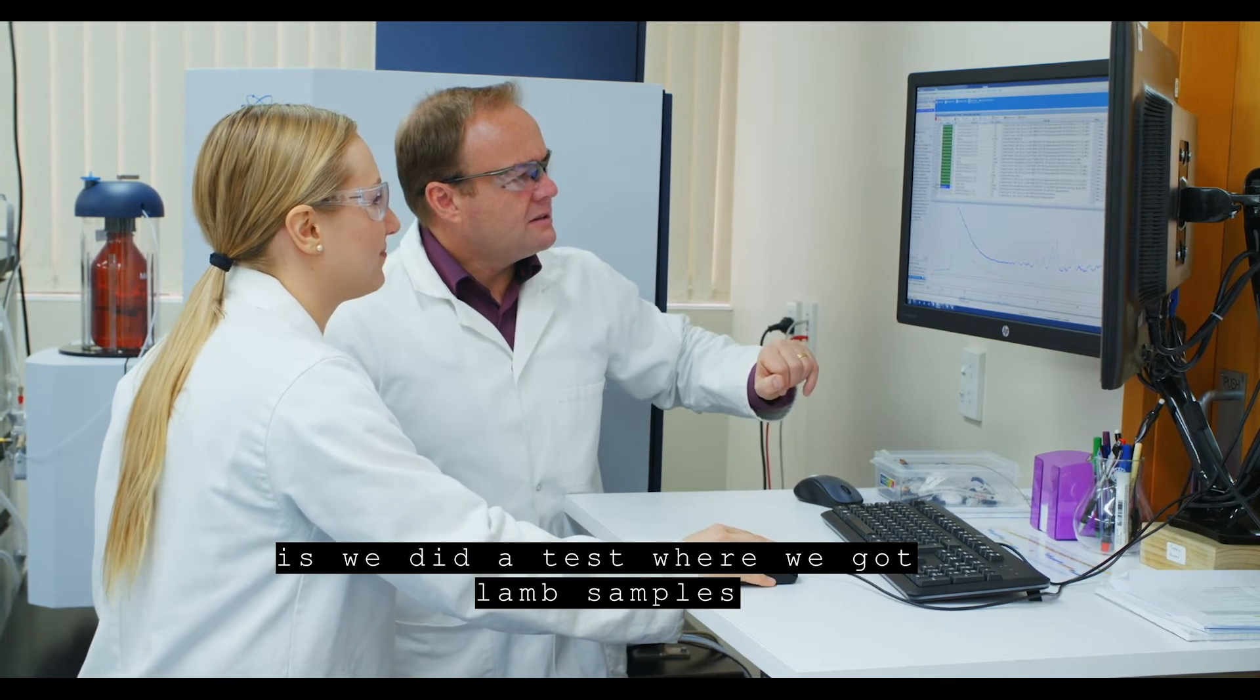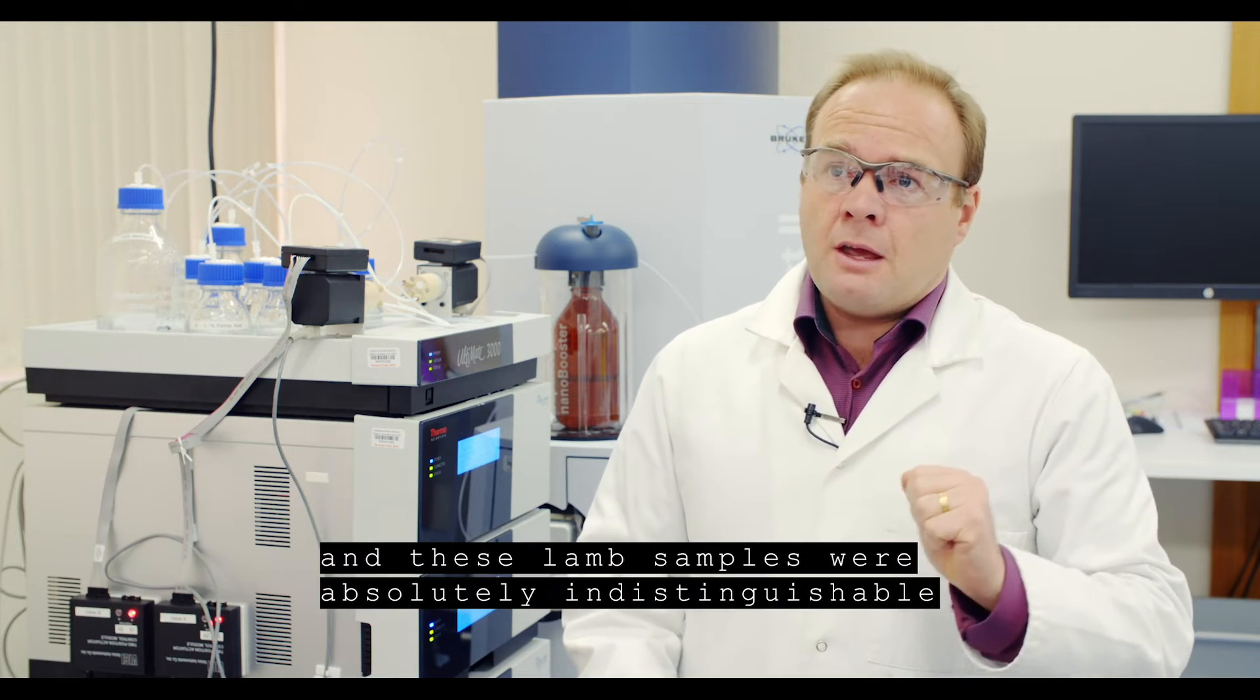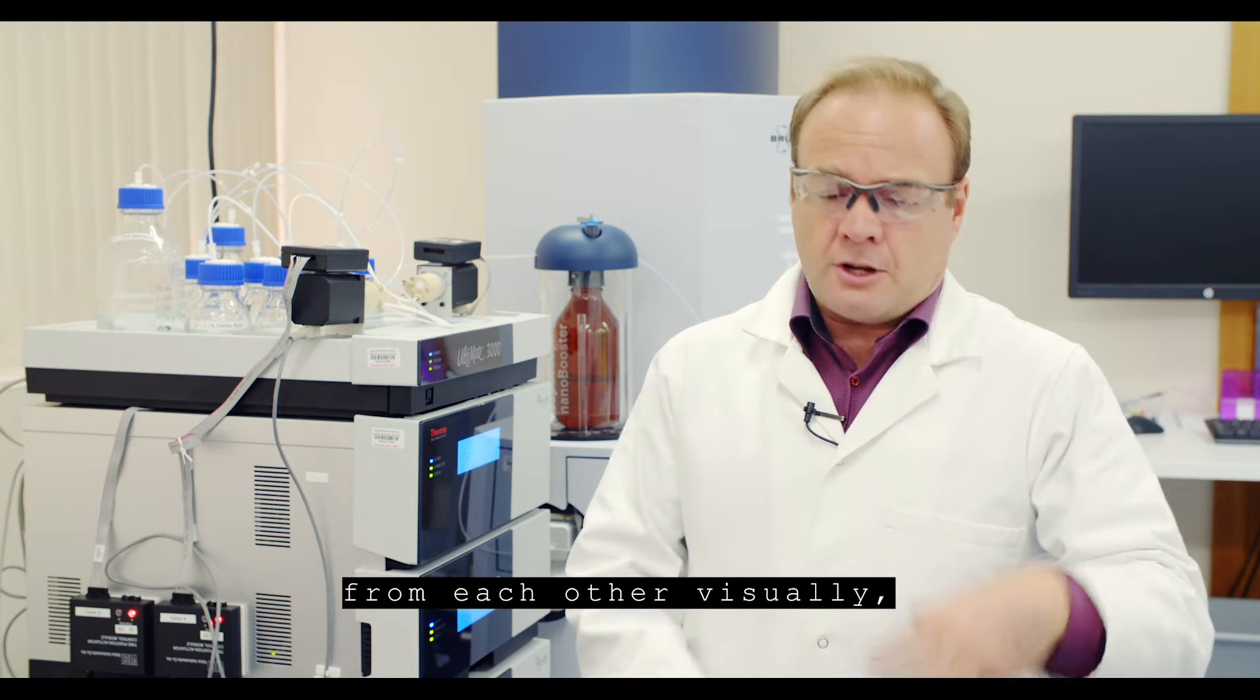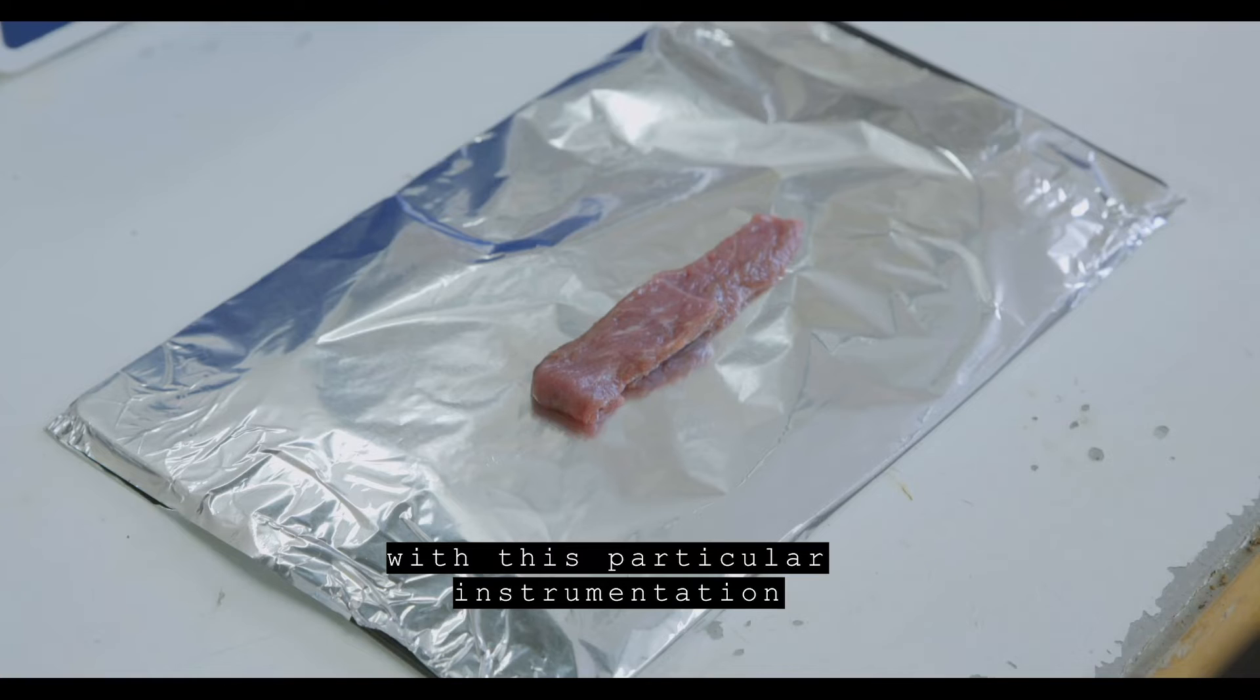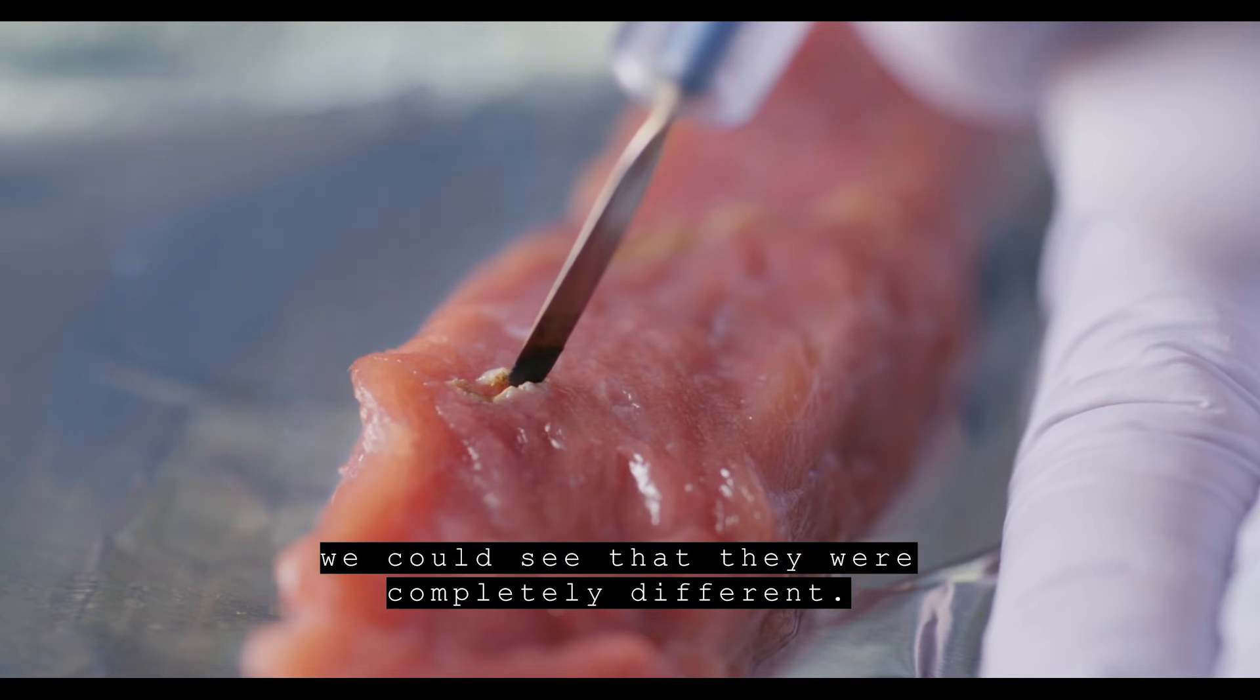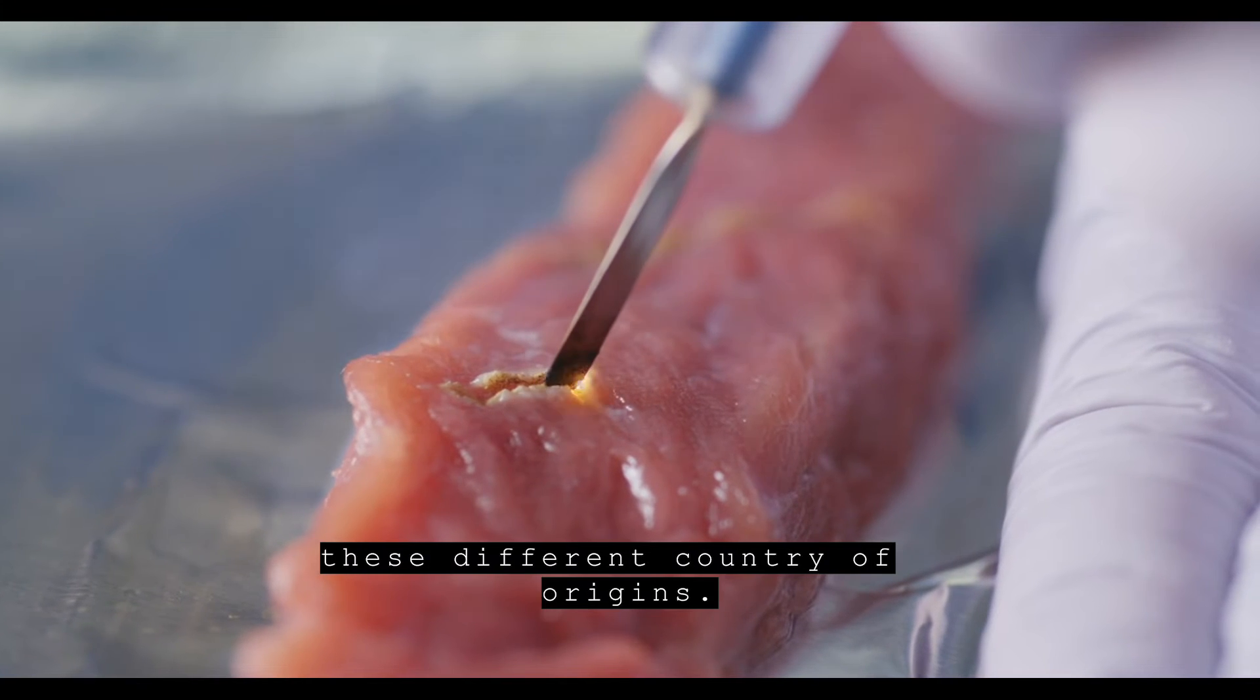One example is we did a test where we got lamb samples from New Zealand, England, and Wales. These lamb samples are absolutely indistinguishable from each other visually. But within an hour of doing measurements with this instrumentation, we can see from their molecular signatures that they were completely different. There's no trouble differentiating between these different countries of origin.